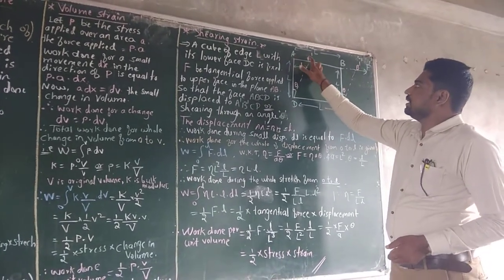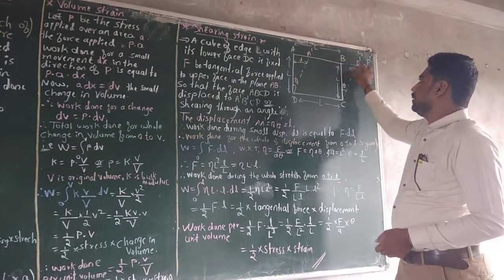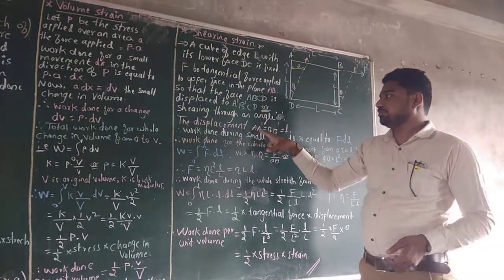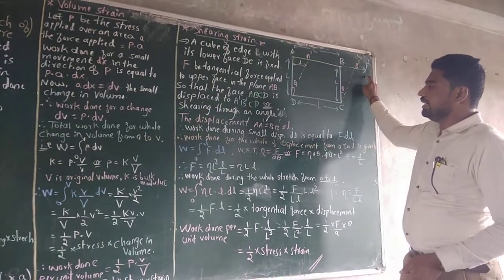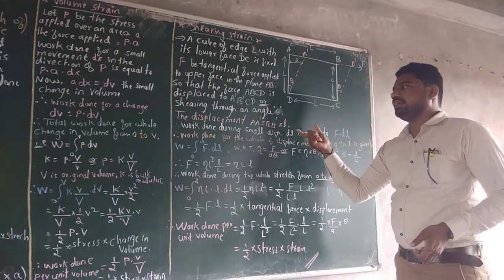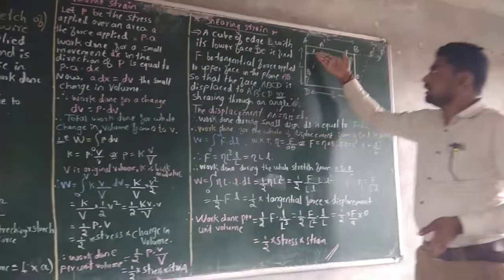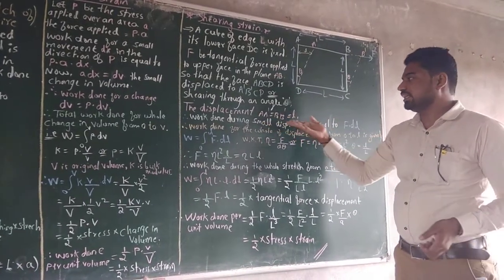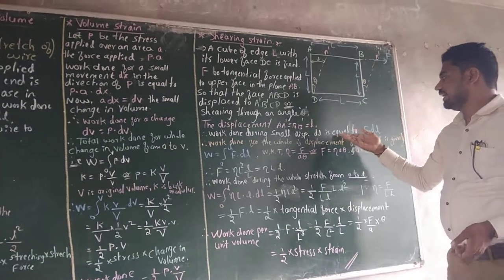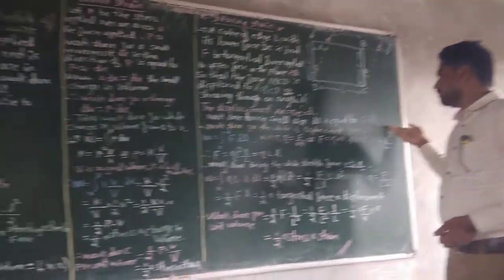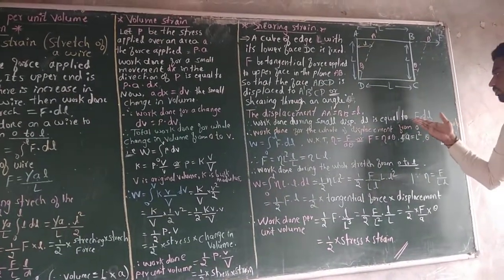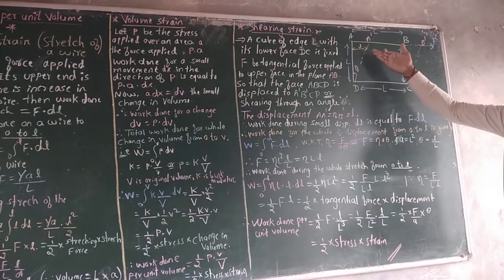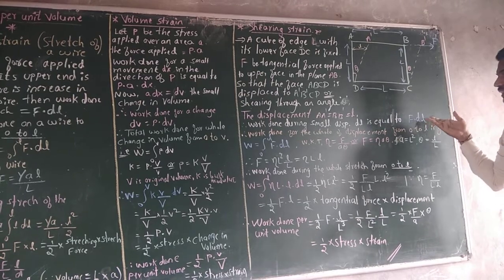The displacement AA-dash equals BB-dash equals small L. Therefore, when the position changes, work done occurs. Work done during small displacement dL equals F into dL, because work equals force into displacement.